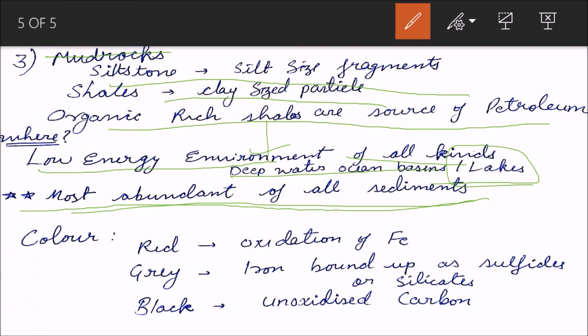Color - it is of red color, gray color, and black color. Red color is due to oxidation of iron Fe2O3. Iron bound up as sulfide or silicate gives the gray color. Iron sulfide FeS or FeS2.